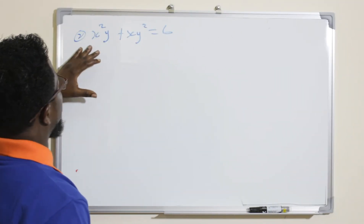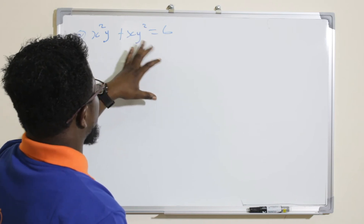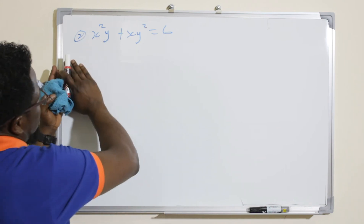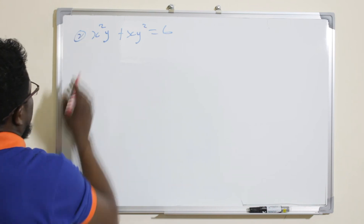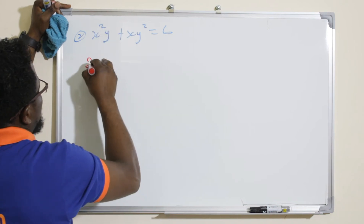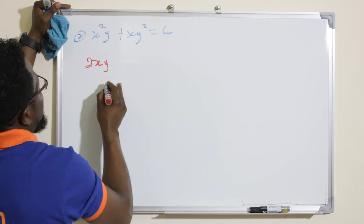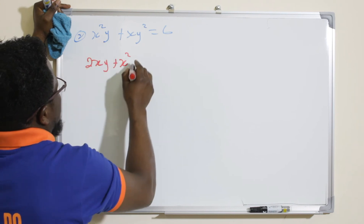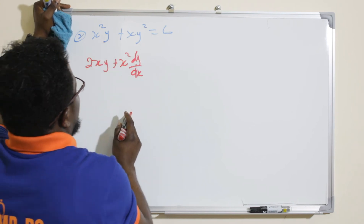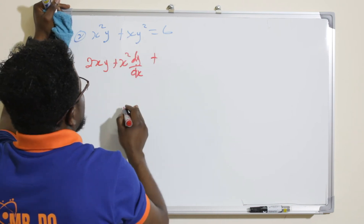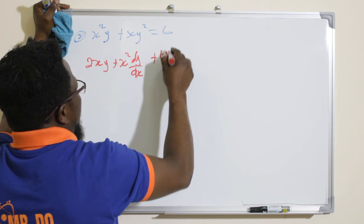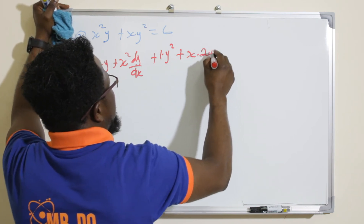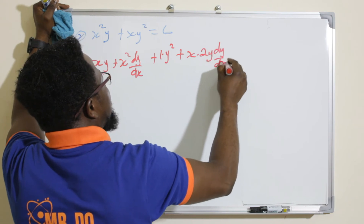Question two: x²y + xy² = 6. We apply the product rule. Differentiating x²y — keeping y constant gives 2xy, plus keeping x² constant and differentiating y gives x² · dy/dx. Then differentiating xy² — keeping y² constant gives y², plus keeping x constant and differentiating y² gives 2xy · dy/dx. This equals zero.